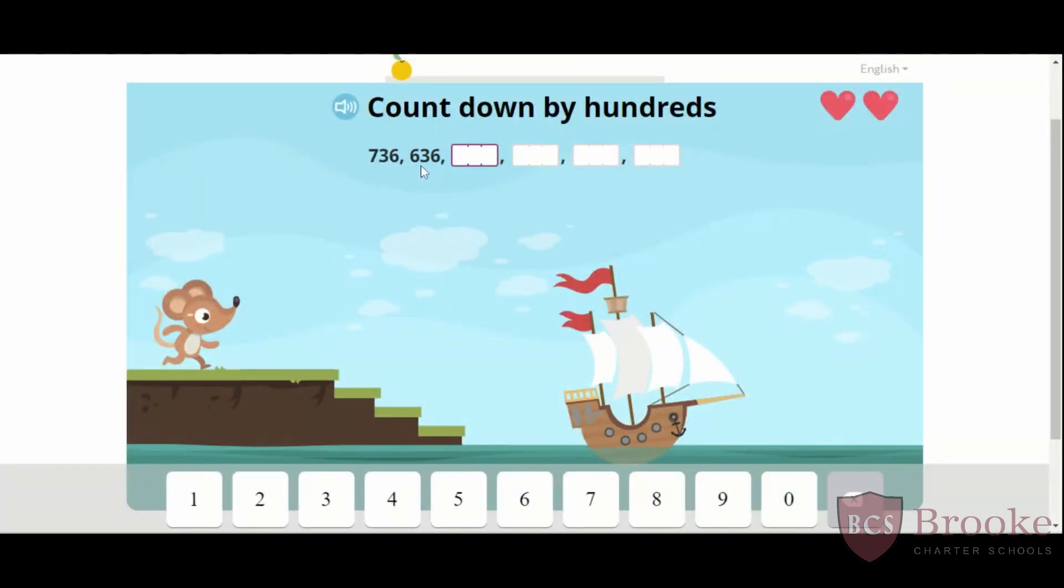Good, 6. So when I go from 7 to 6, do I get bigger by 1 or smaller by 1? Right, I get smaller by 1. So this pattern is counting down. 700, then 600. So next would be?